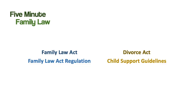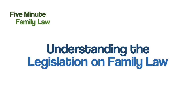And there you have it. The two main laws in British Columbia are the Provincial Family Law Act and the Federal Divorce Act. The regulation to the Family Law Act talks about who can be a mediator, an arbitrator, or a parenting coordinator, and the main regulation to the Divorce Act is the Child Support Guidelines, which talks about how we calculate child support and parents' share of children's special expenses. Together, the Family Law Act and the Divorce Act are the legislation on family law in British Columbia.